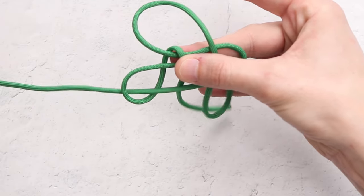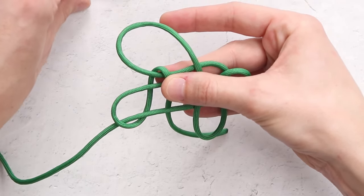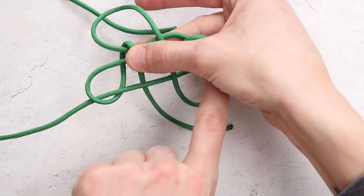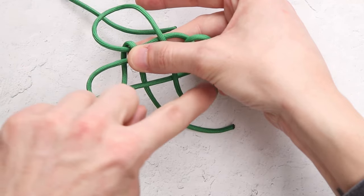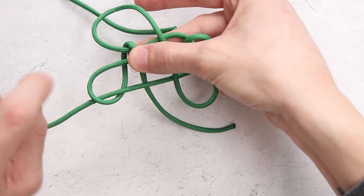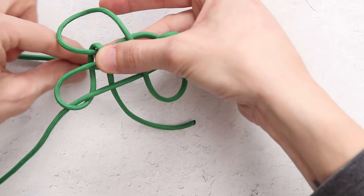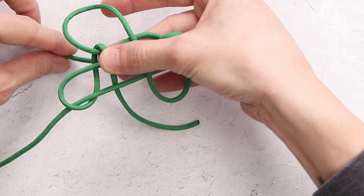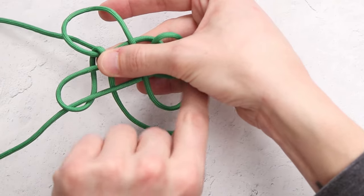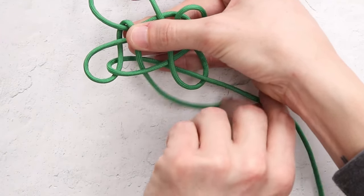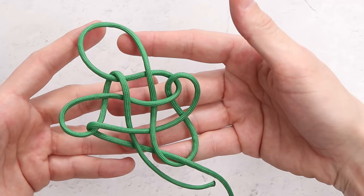For our next step, we're going to take our same working strand, and we're going to go through this little loop that we had just made when we went across all of the cords the first time. So we're going to take our cord, we're going to bring it through, around the back of everything, and through our little bottom right loop. So at this point, you want it to look like that.